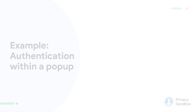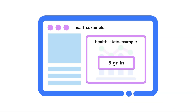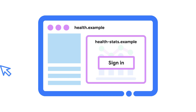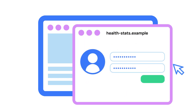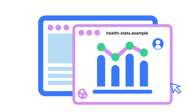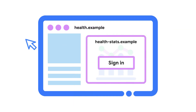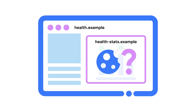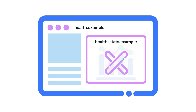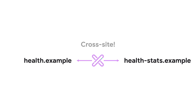Another scenario that may be impacted includes authentication within a top-level context. Imagine a user visits health.example, which embeds a health stats.example dashboard. The user data is managed by health stats.example, and the user has previously signed in when visiting it as a top-level site. To render a health statistics dashboard, the health stats embed needs to validate the user identity using a session cookie. If cookies are not available, the dashboard won't render as expected.